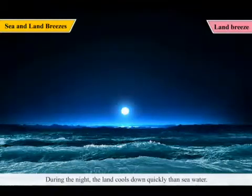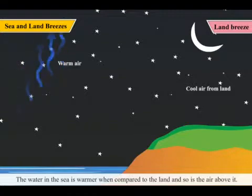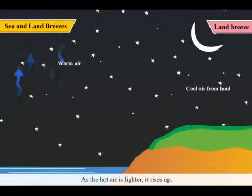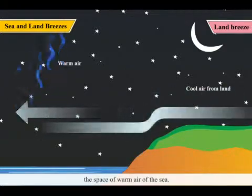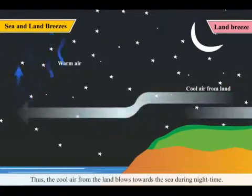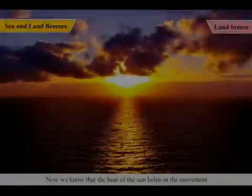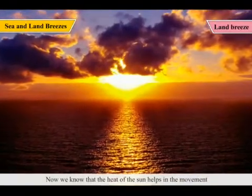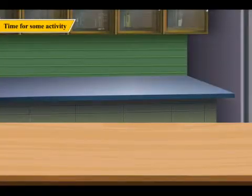During the night, the land cools down quickly than seawater. So, the air above it cools down. The water in the sea is warmer compared to the land, and so is the air above it. As the hot air is lighter, it rises up. The cool air from the land moves towards the sea and occupies the space of warm air of the sea. Thus, the cool air from the land blows towards the sea during nighttime. This is called the land breeze. Now, we know that the heat of the sun helps in the movement of air and causes sea and land breezes.